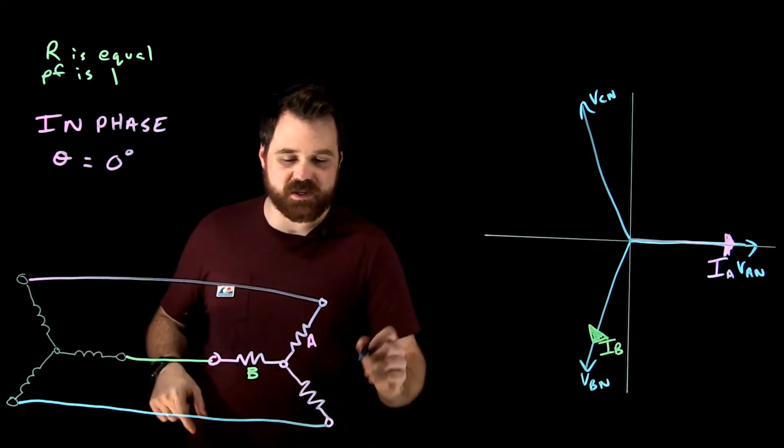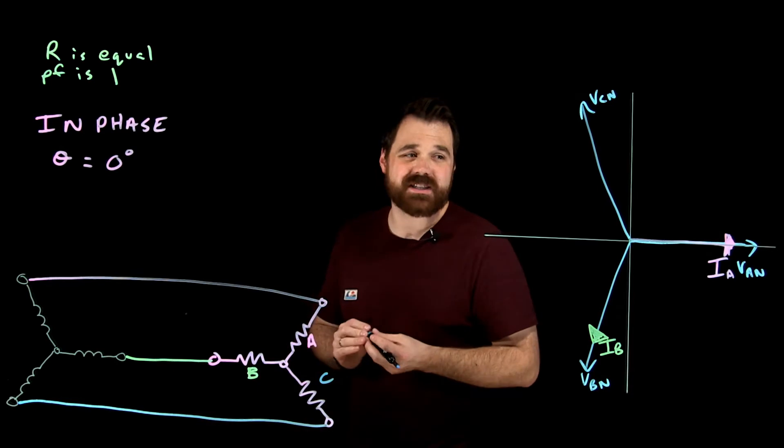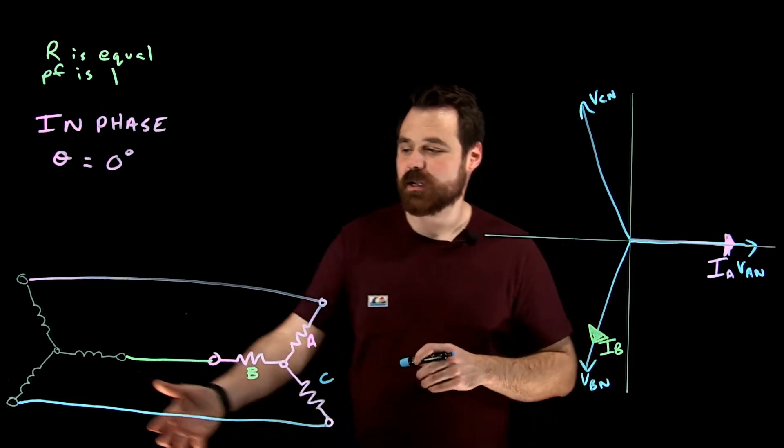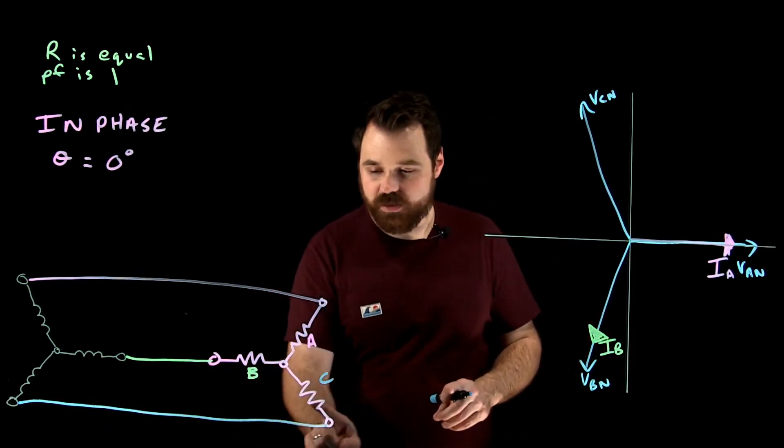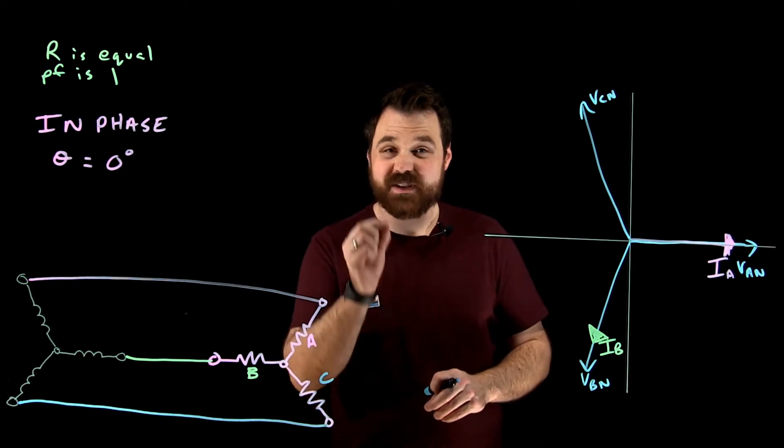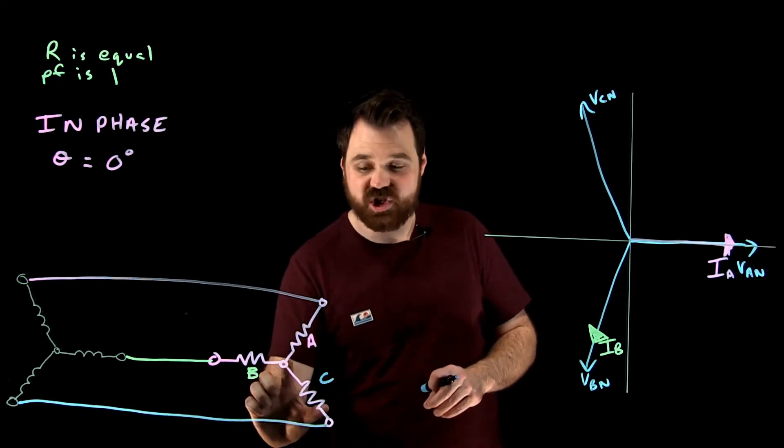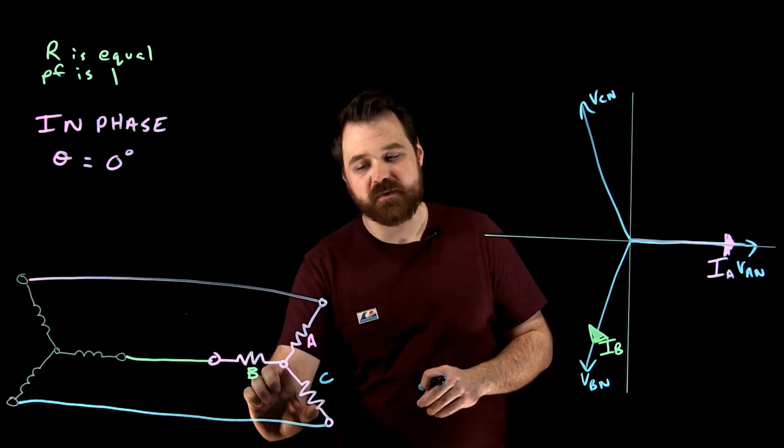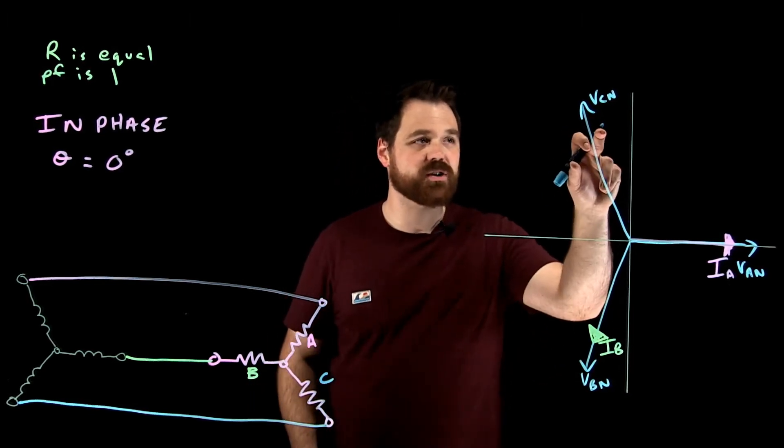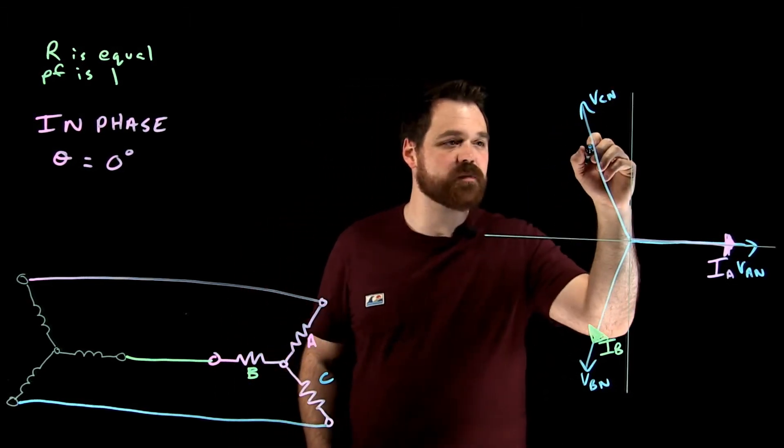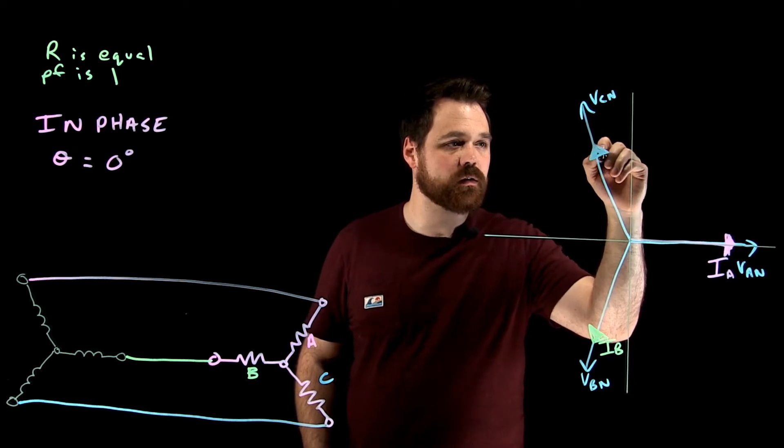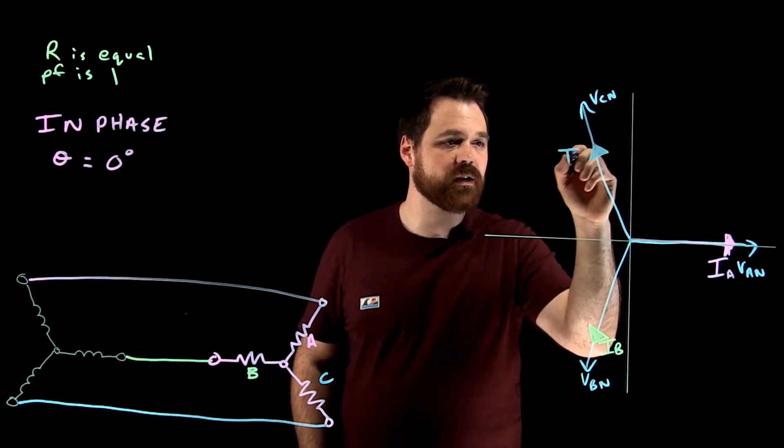And then finally, we come to phase C, where we're going to see the exact same relationship. The current flowing through phase C is going to be in phase with the voltage across phase C, not the line voltage, but the phase voltage. My phase voltage is here, V C to N. That means my current is going to be right there, I C.